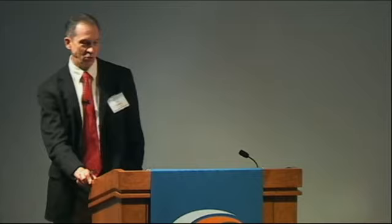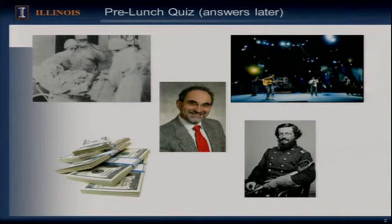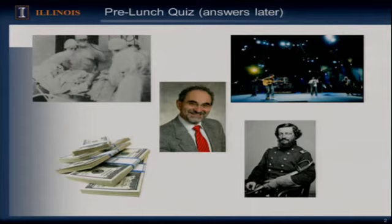To make it a little bit easier, I'm going to start by giving you a pre-lunch quiz. As I go along, I want you to look for clues to the answers of how Eli might be related to a Civil War general, a 1930s surgical suite, a rock band, and you've probably had a few hints about large piles of money.